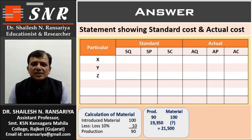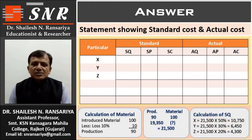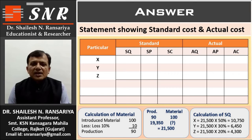Now, standard quantity for X, Y, and Z. X = 21,500 × 50% = 10,750. Y = 21,500 × 30% = 6,450. Z = 21,500 × 20% = 4,300 kilograms.